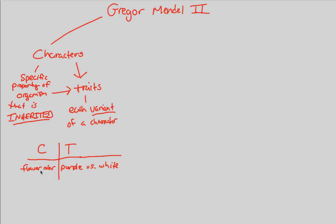These were the literal traits that he saw, each variant of a character. So we have flower color, purple versus white. Let's imagine a human example, hair color, brown versus blonde. This is a character, the general thing, and the trait is the specific variant.